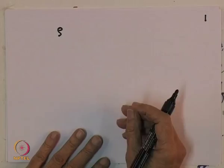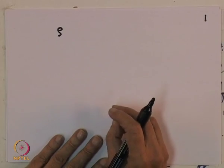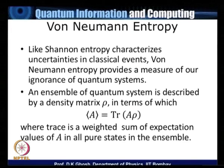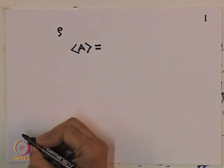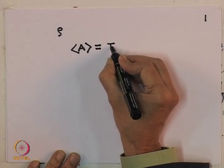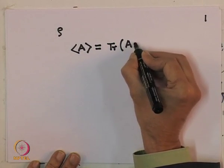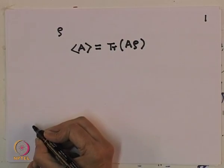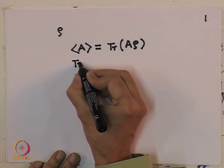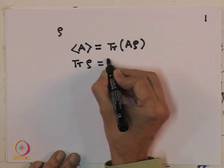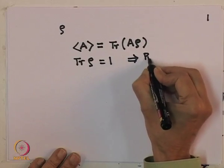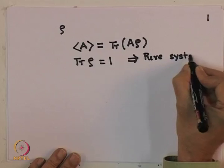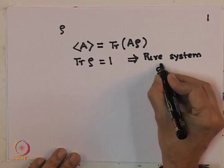We have had quite a bit of discussion on the properties of the density matrix. If I have an observable A, the expectation value of the operator A is given by trace of A with ρ, where ρ is the density matrix, and the density matrix has the property that trace of ρ is equal to 1. For a pure system, ρ squared must also equal ρ.